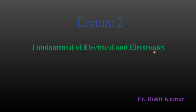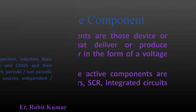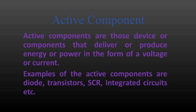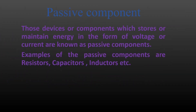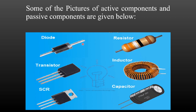Hello everyone, welcome again to this new session. This is lecture number two of Fundamentals of Electrical Electronics. In the previous lecture we covered the syllabus of Unit 1, and we also saw active components and passive components, as well as the differences between them. Diode, transistor, and SCR are active components, whereas resistor, inductor, and capacitor are examples of passive components.